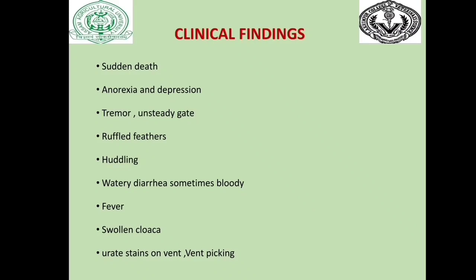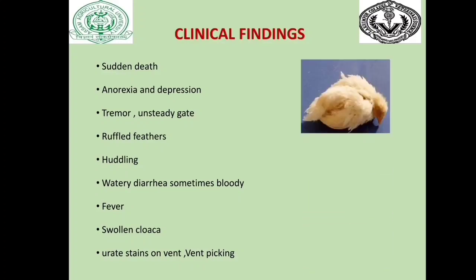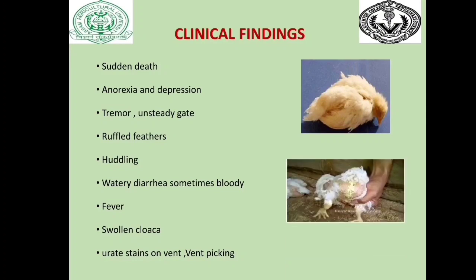Clinical signs include sudden death, anorexia, depression, tremor, unsteady gait, ruffled feathers, huddling, watery diarrhea (sometimes bloody), fever, swollen cloaca, urate stain on vent, and vent picking. Vent picking is one of the most important clinical signs. Pictures show a depressed bird lying with its beak touching the ground, and diarrhea with urates.